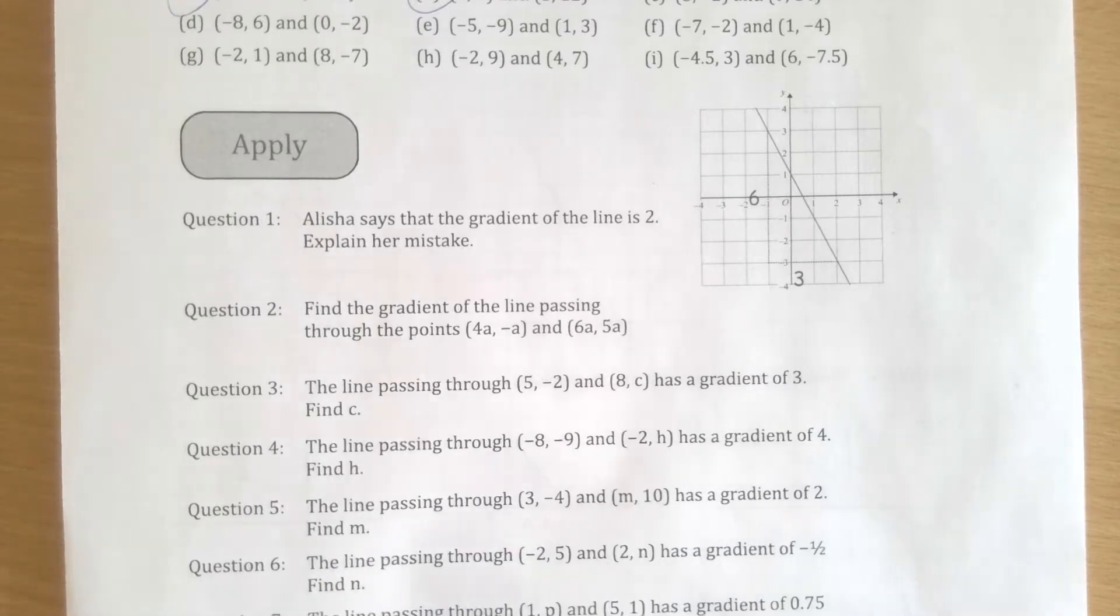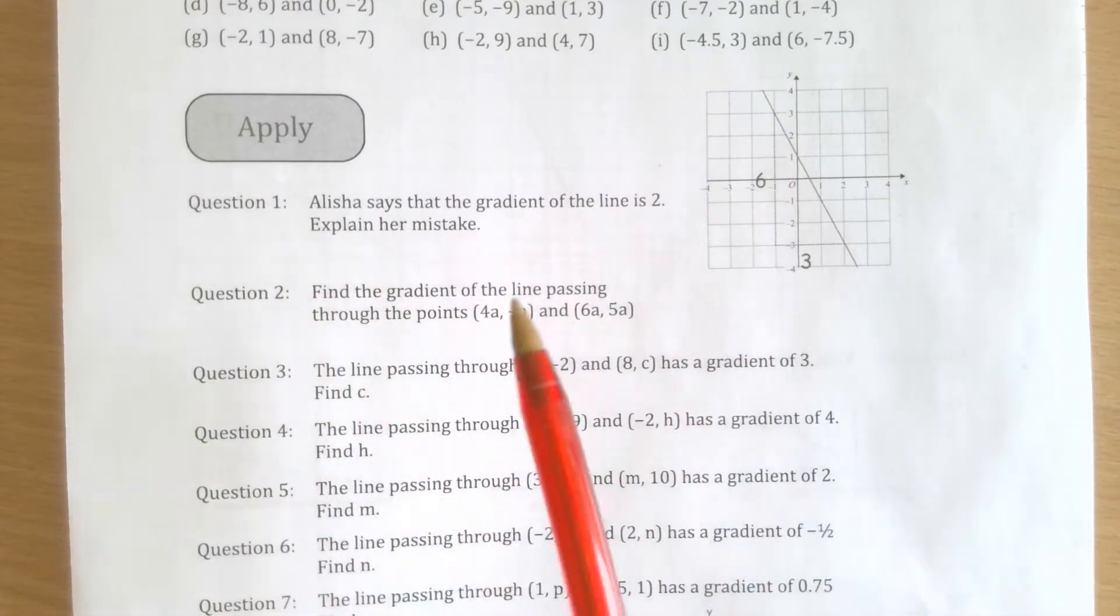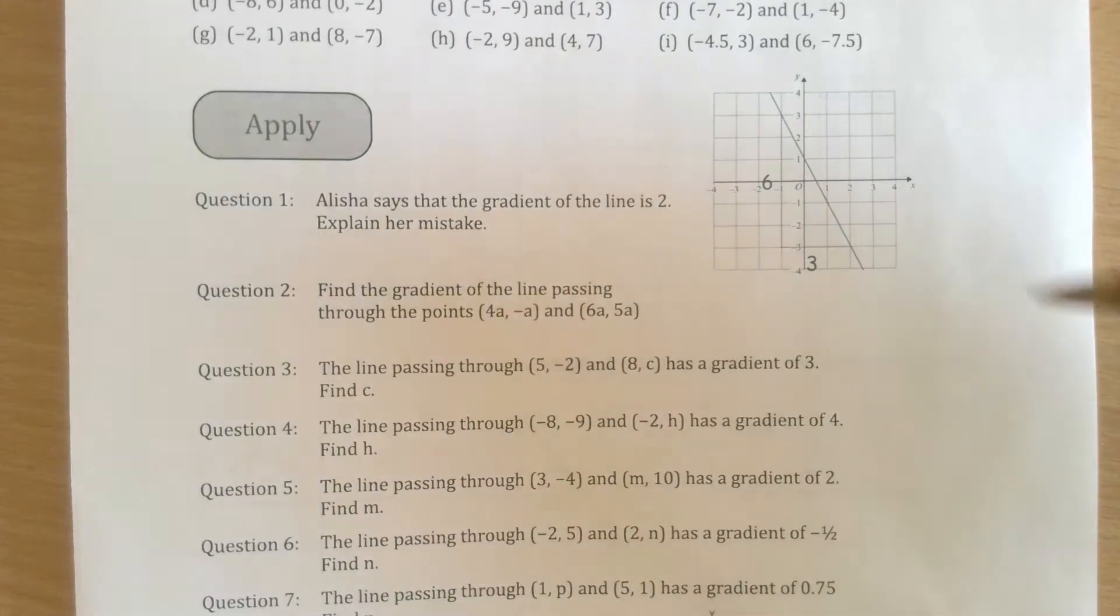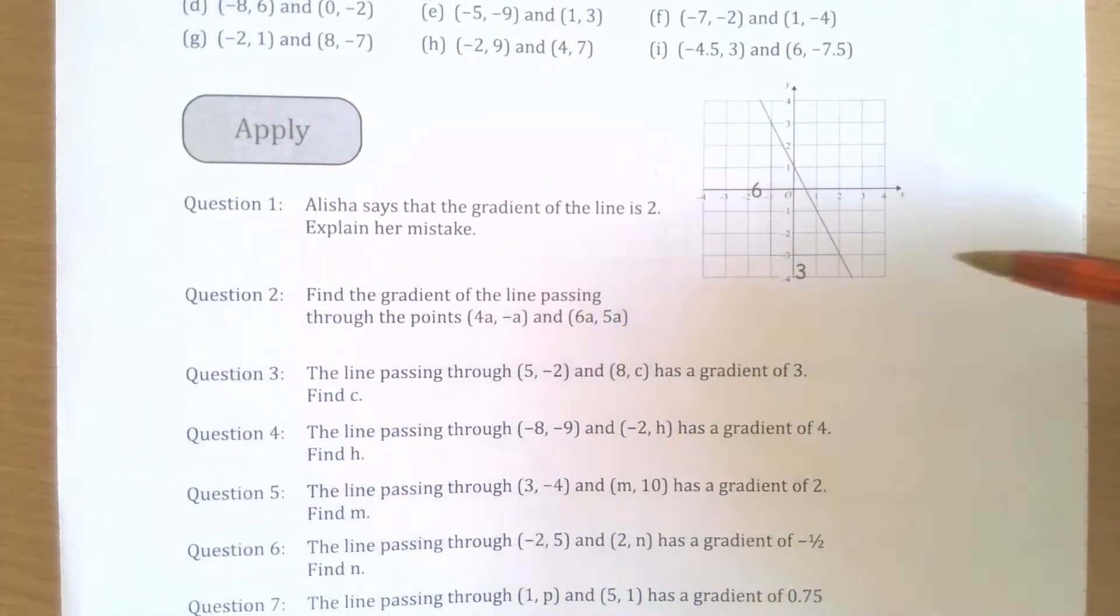Question one, some applied gradient questions here. Alicia says the gradient of the line is 2. Explain her mistake. You should notice this line here, talking about the one on the right. It's downward sloping, right?